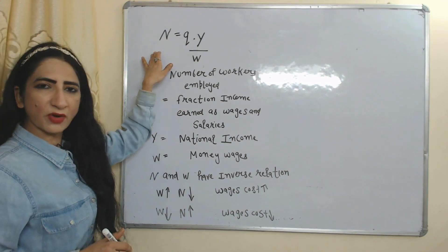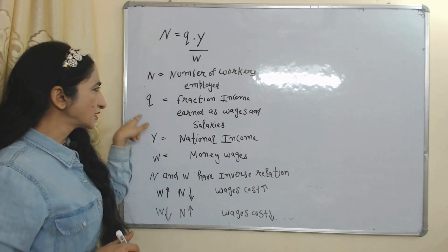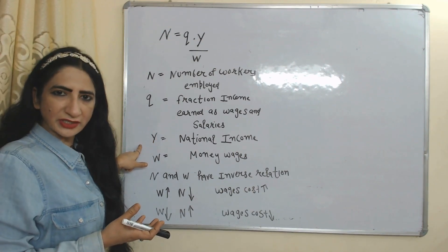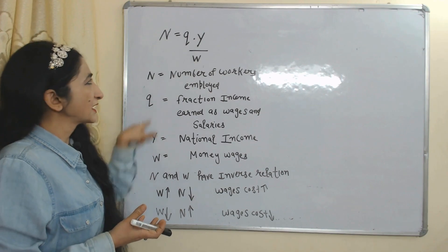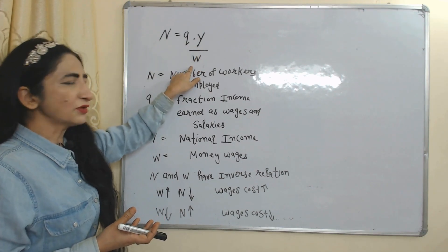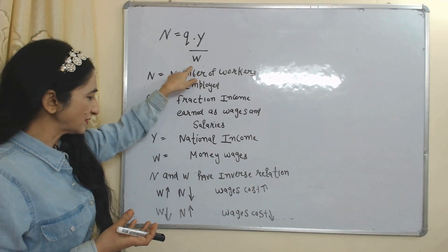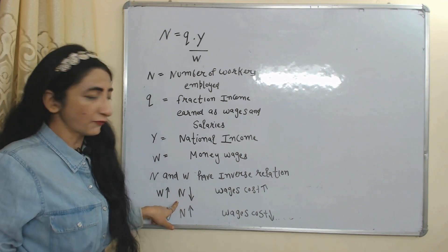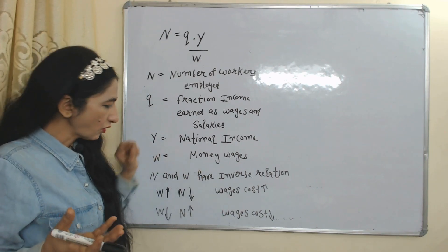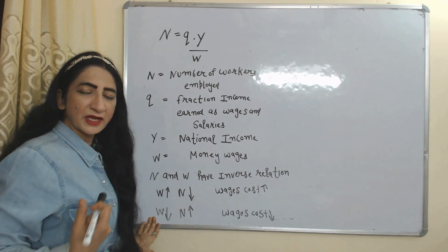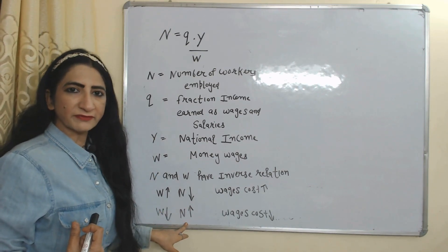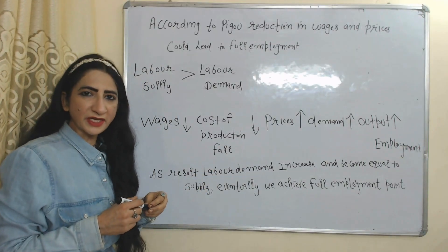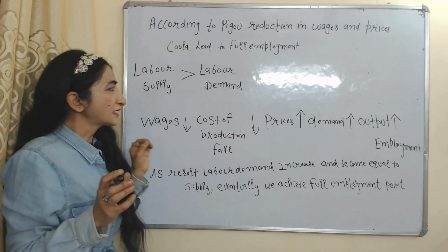In this equation, N is the number of workers employed, Q is the fraction of income which we earn in the form of wages and salary, Y is national income, and W is money wages. If Y is given, then N and W have an inverse relation — meaning when money wages increase, employment will fall, as wages cost increases. On the other hand, if money wages fall, employment will increase because wages cost will fall.